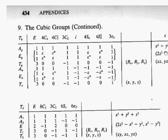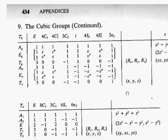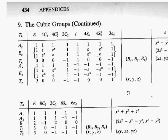Last time we talked about low symmetry point groups, and we talked about the C and D family point groups. So now we're going to talk about high symmetry point groups, and these are really easy to pick.